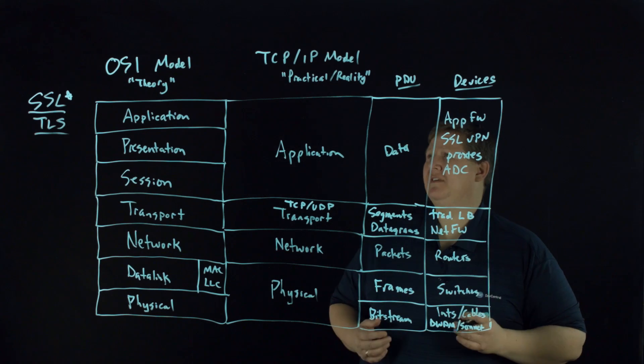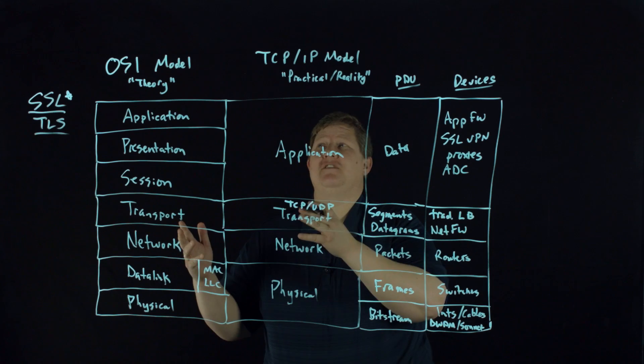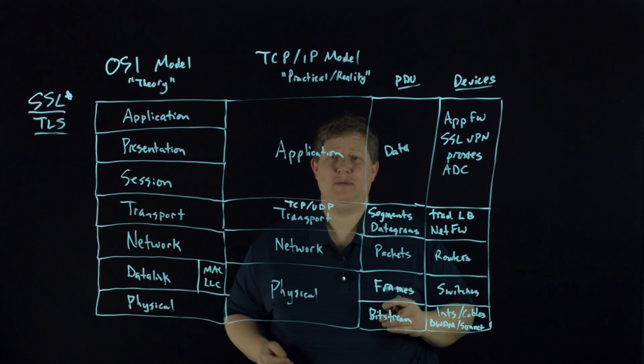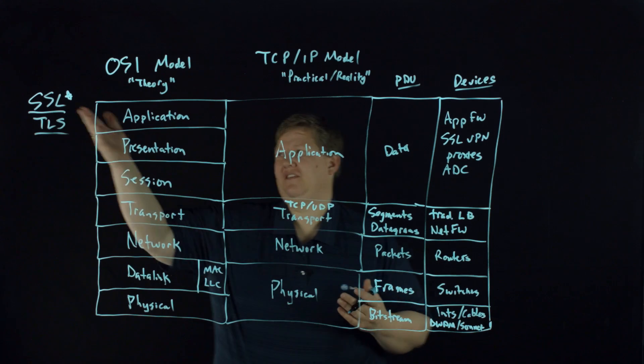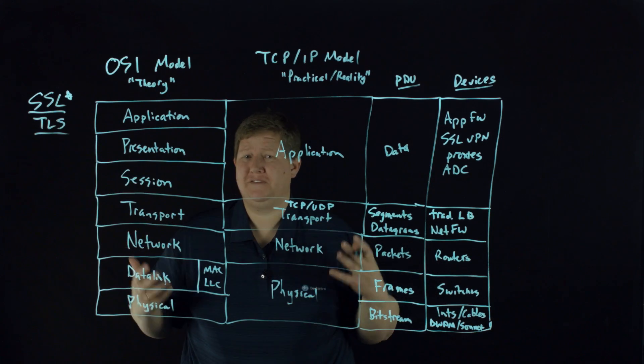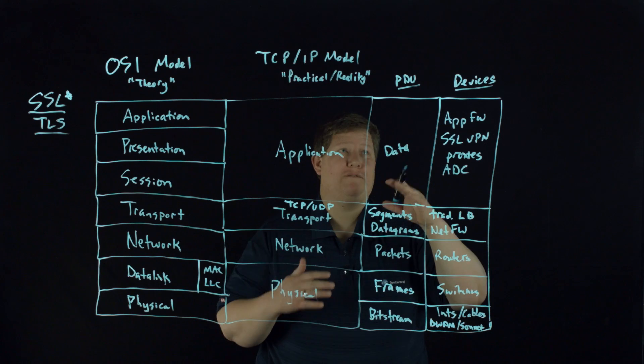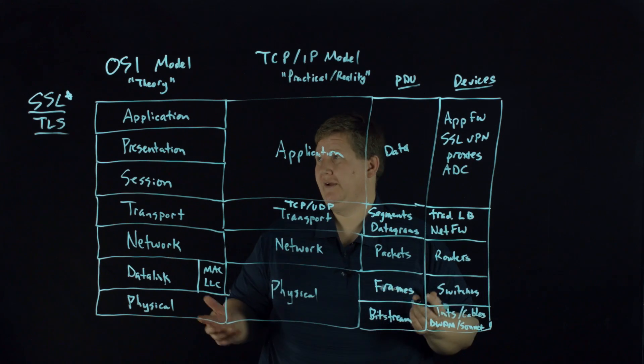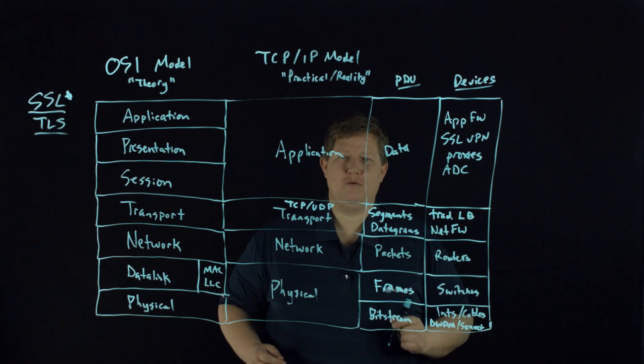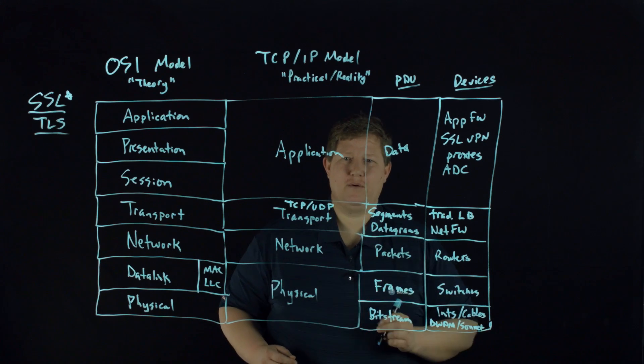Hopefully this has been a helpful introduction to the differences between OSI model, TCP/IP model, and the fact that they're just models that things like SSL and TLS, they don't always fit in a box. And then the different protocol data units for the different layers, some of the devices that fit into these different layers. See you out there in the community. Make sure you subscribe to our channel. And thank you very much.